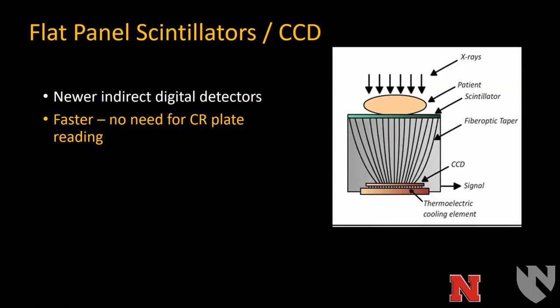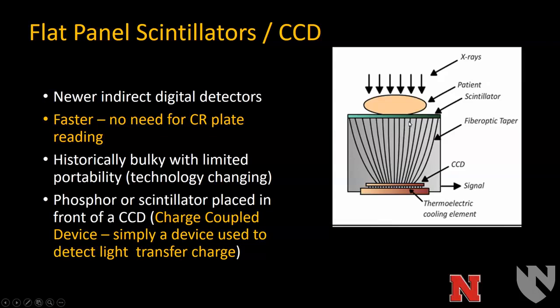Flat panel scintillators using CCDs are types of indirect digital detectors. They have a scintillator, but CCDs can only be made so large, so a fiber optic taper is used to reduce the image size to fit the detector. The advantage here, compared to computed radiography, is that you don't have to physically read off a storage phosphor — you get the image immediately. Historically, the problem with these systems was that they were more bulky, though that's changing.